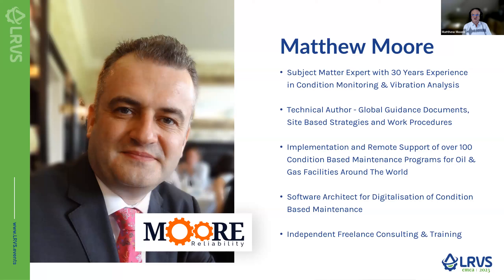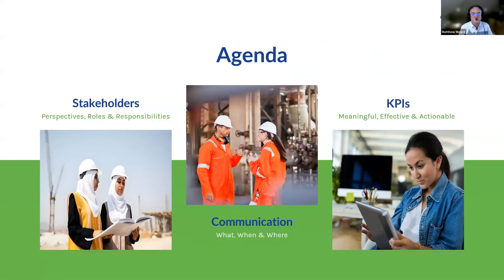I'm now an independent freelance consultant and I'm involved in training. Today we're going to talk about three main topic areas. We're going to be looking at stakeholders — what are their roles and responsibilities and how do their different perspectives influence our program? We'll then look at communication: the who, where, why, what, how we interface with each other and the workflows and how we communicate our information. And we'll be rounding it off by looking at KPIs that are effective, meaningful and actually benefit our program.